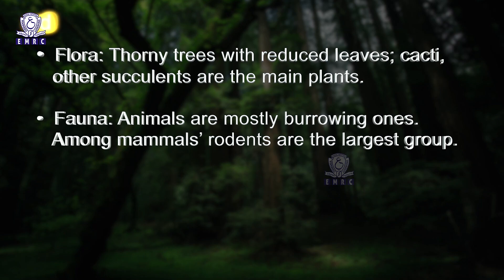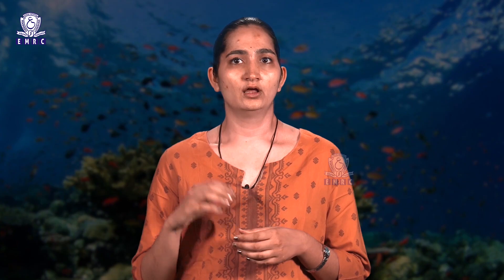The Thar Desert of Rajasthan has unique flora and fauna. Flora is dominated by thorny plants with reduced leaves; cacti and other succulents are the main plants. Fauna consists mostly of burrowing animals. Among mammals, rodents are the largest group.